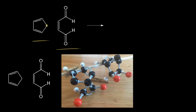Let's think about our Diels-Alder reaction without any stereochemistry. We're going to move our six pi electrons around. We take these pi electrons and move them in to form a bond between these two carbons. These pi electrons are going to form a bond between these two carbons, and finally these pi electrons are going to move down.